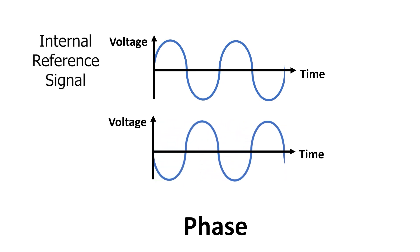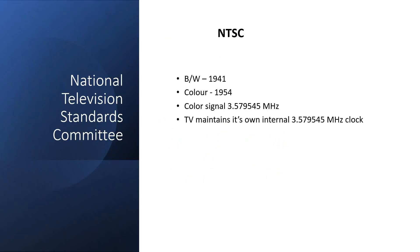And to do this, the color TV or monitor maintains its own internal 3.579545MHz signal. But how do we make sure that this internal clock has the same phase and amplitude as the clock used to generate the signal? If they're out of phase, the colors will all be wrong. The solution is the color burst signal.